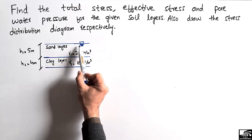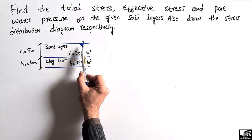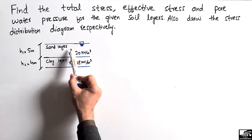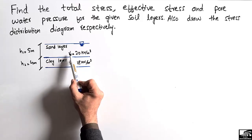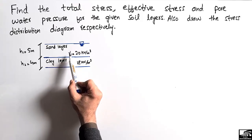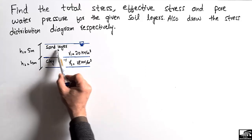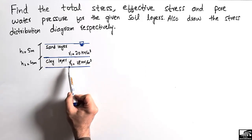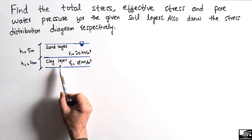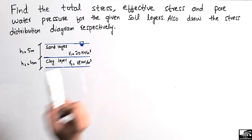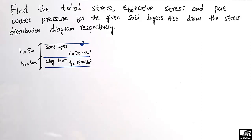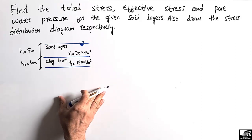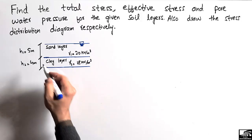The water table is at the top of these two layers, so the unit weight will be called the saturated unit weight. Gamma one for the sand layer is 20 kN per cubic meter, and for the clay layer it is 18 kN per cubic meter.